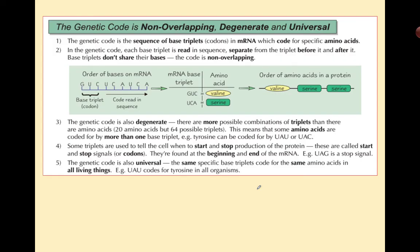There's some additional detail here you might want to look at, taken from the CGP book. It talks about non-overlapping, degenerate, and universal properties of the genetic code. This is a bit higher level and you may not need to cover this, but if you want to, you can find these terms explained: non-overlapping, degenerate, and universal.